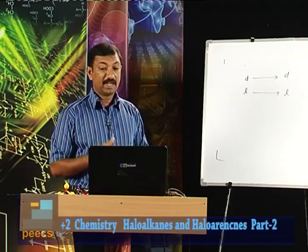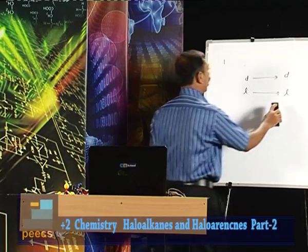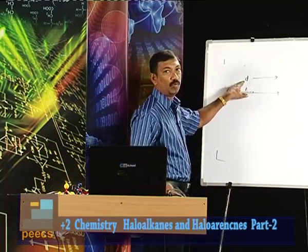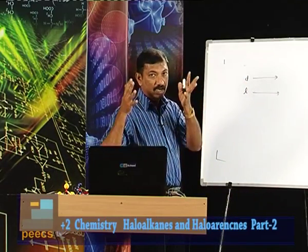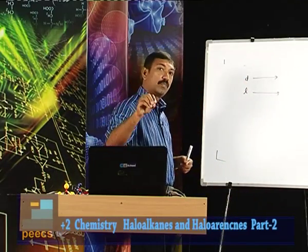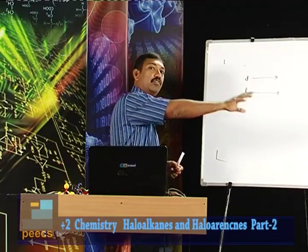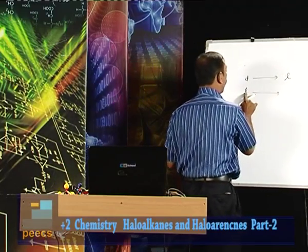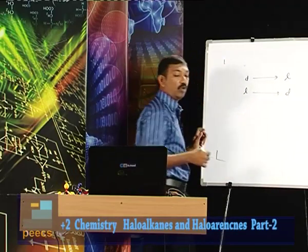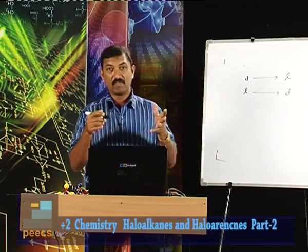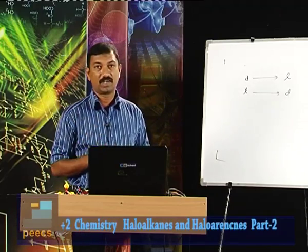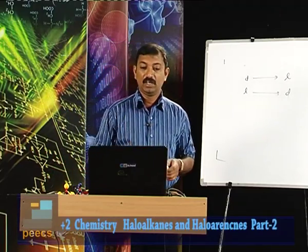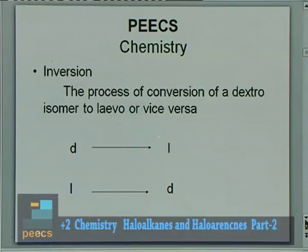Inversion is the process of conversion of a dextro isomer to levo, or levo to dextro. If a beaker contains 100 dextro molecules, after a particular process all the dextro molecules become levo. This process is known as inversion of configuration, sometimes regarded as Walden inversion.